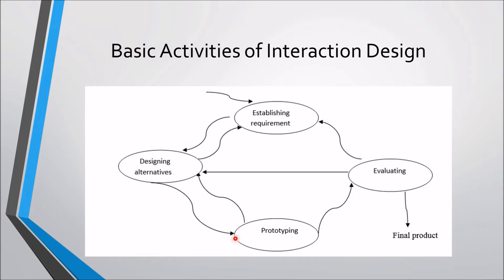In this diagram, you will see that we start the process of interaction design by establishing the requirements first. In this phase, we gather the functional, data, and environment requirements through several techniques, such as interviews, surveys, and other methods of gathering information. We also include in this activity the different methods in understanding and knowing the various ways users use or interact with a product, by making scenarios, use case diagrams, and task analysis, such as the hierarchical task analysis that we have discussed previously.